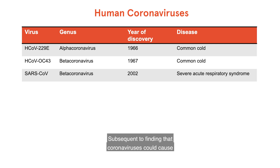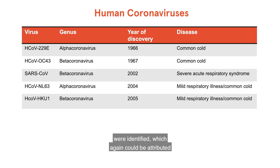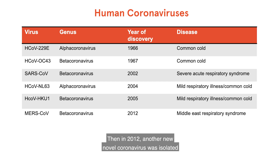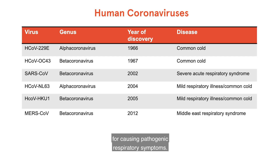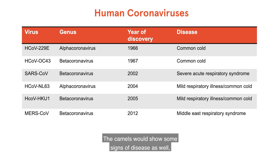Subsequent to finding that coronaviruses could cause such severe pathological disease in humans sparked an interest in investigating what other coronaviruses might be circulating in the human population. Consequently, two other human coronaviruses were identified, which again could be attributed to causing mild upper respiratory conditions in otherwise healthy humans. Then in 2012, another novel coronavirus was isolated, which was again responsible for causing pathogenic respiratory symptoms, and this was termed Middle Eastern Respiratory Syndrome. It was found circulating in the Middle East, and found to be introduced into humans from infected dromedary camels. The camels would show some signs of disease as well, meaning they're unlikely to be the true natural host for this virus.